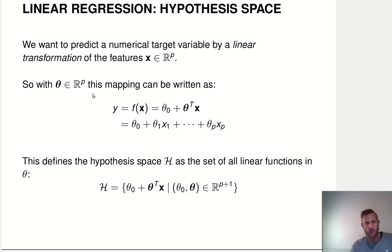So our parameter vector θ defines our model, and this means that here is a case where the model is so simple that we can actually write out the hypothesis space explicitly in set notation. Our hypothesis space is the set of all linear functions of x with parameters θ₀ and the parameter vector θ. In total we have p+1 parameters to learn if we have p features.